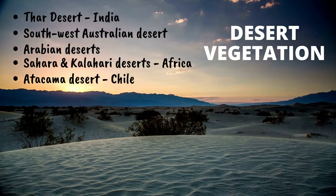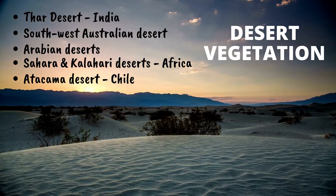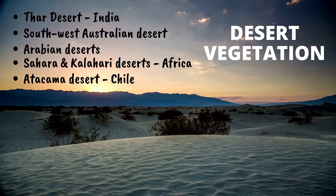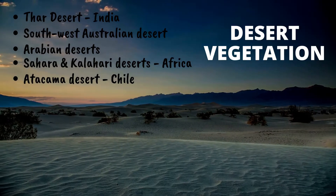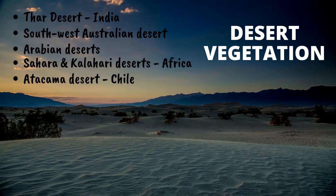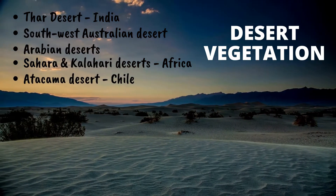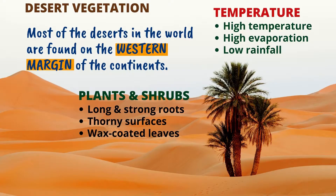Also the deserts in Africa and the Atacama Desert in Chile — these are the places where you can find desert vegetation. Most of the deserts in the world are found on the western margin of the continents.